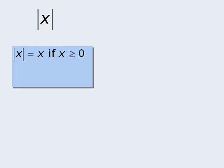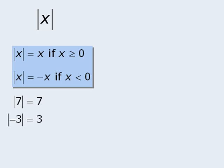One way is to say that the absolute value of x is equal to x if x is greater than or equal to zero, and the absolute value of x is equal to negative x if x is less than zero. So the absolute value of 7 is 7, the absolute value of negative 3 is 3, and the absolute value of zero is zero.